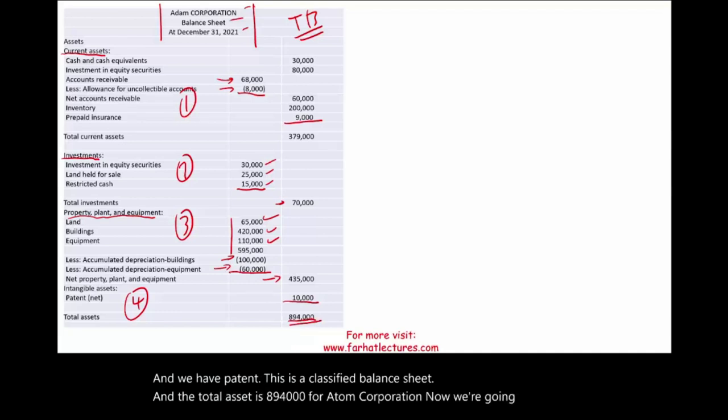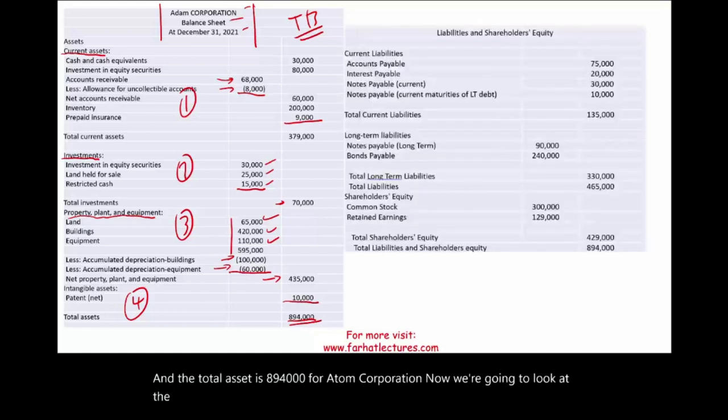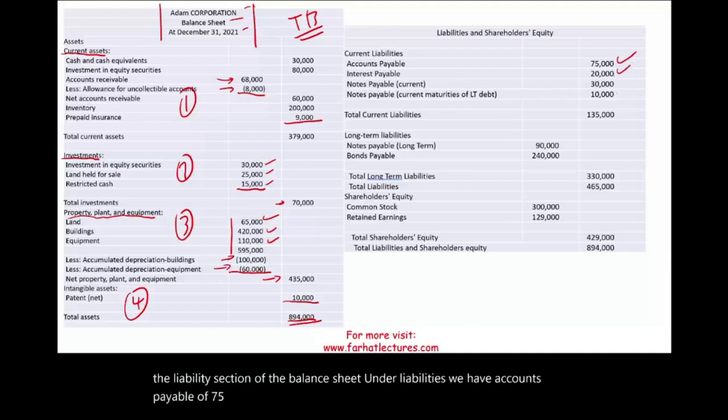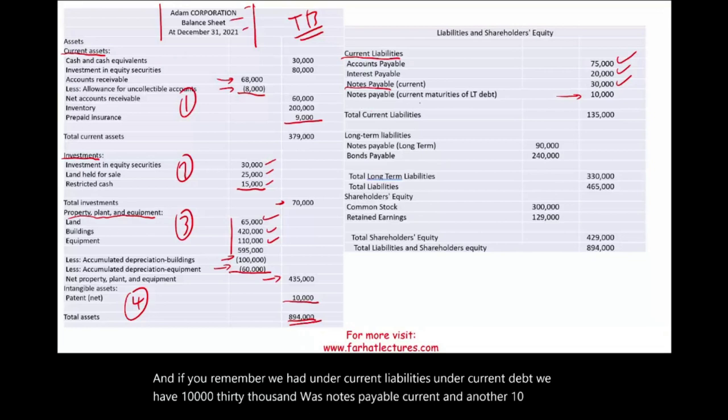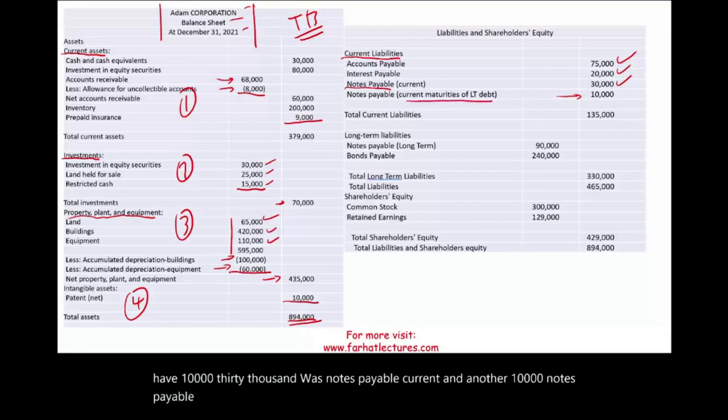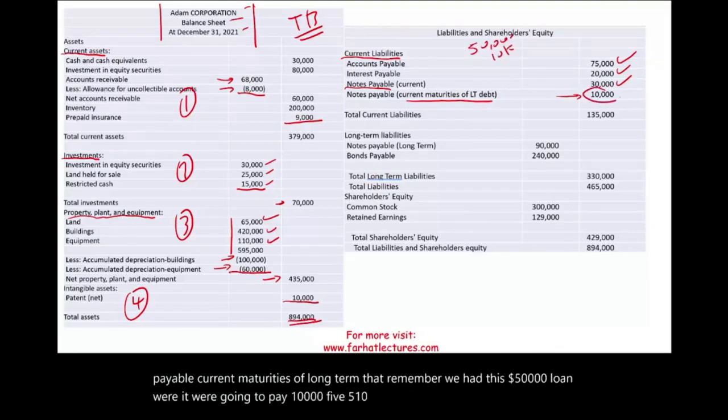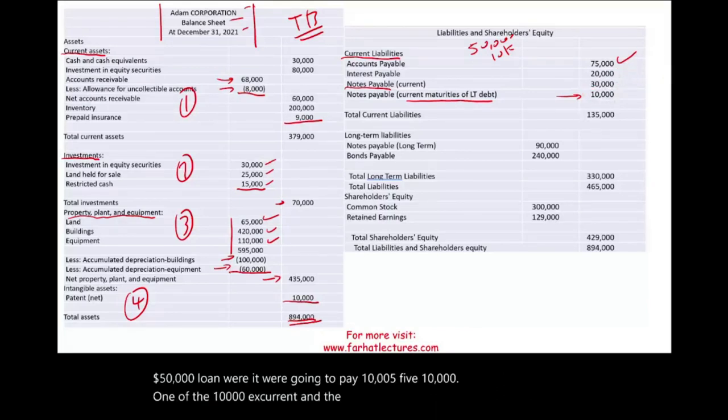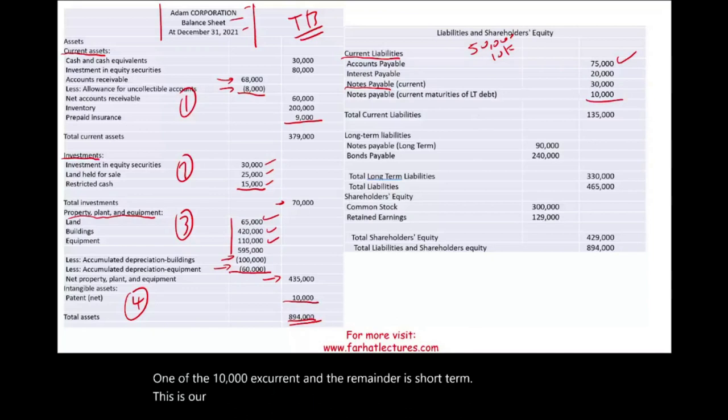Now we're going to look at the liability section of the balance sheet. Under the liabilities, we have accounts payable of $75,000, interest payable of $20,000. And this is coming from the trial balance on the slide before. And if you remember, we had under current liabilities, under current debt, we have $30,000 was notes payable current, and another $10,000 notes payable current maturities of long-term debt. Remember, we had this $50,000 loan where we're going to pay $10,000. One of the $10,000 is current, and the remainder is short-term. Now, this is our current liabilities. We add them up to $135,000.